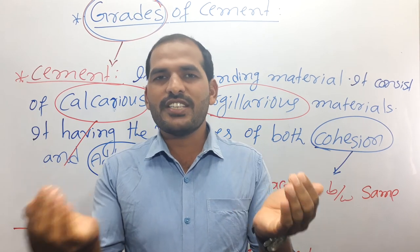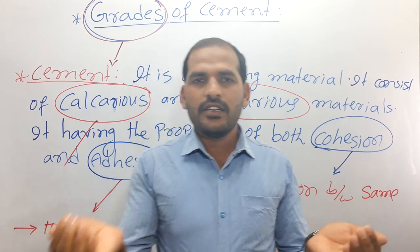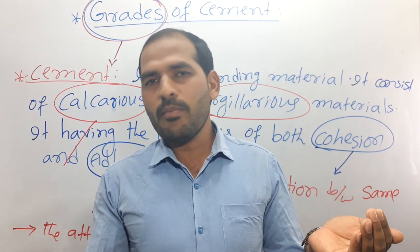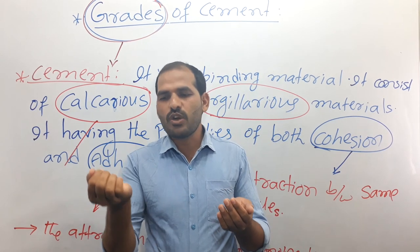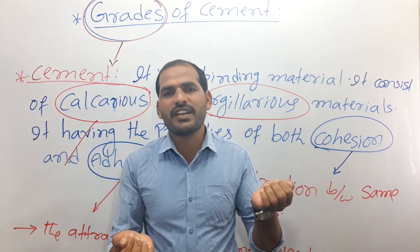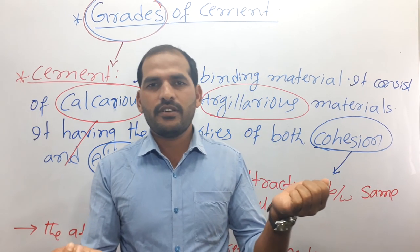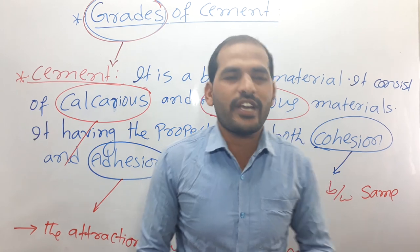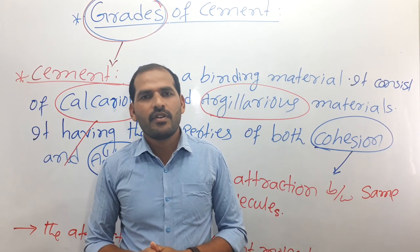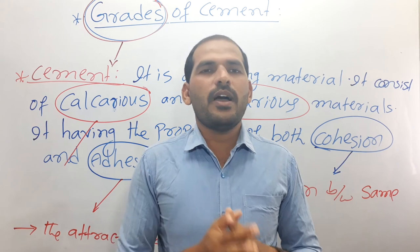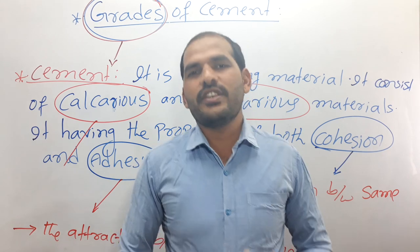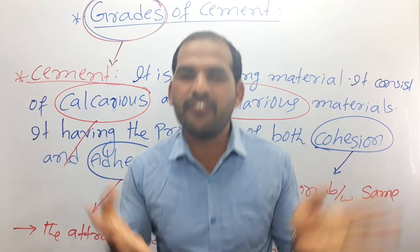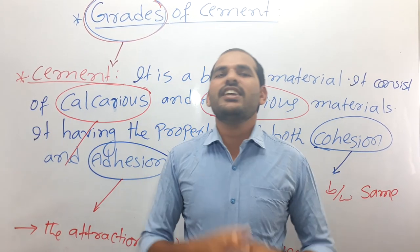Cement has the properties of both cohesion and adhesion. For cohesion: if I take cement on one side and cement on the other side — these are two same molecules — the attraction between these two same molecules is known as cohesion.